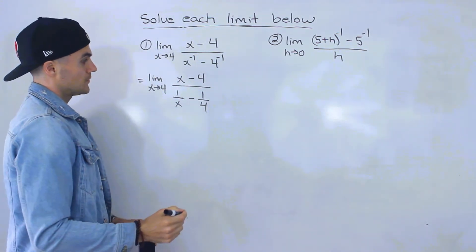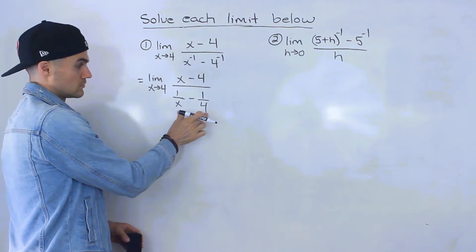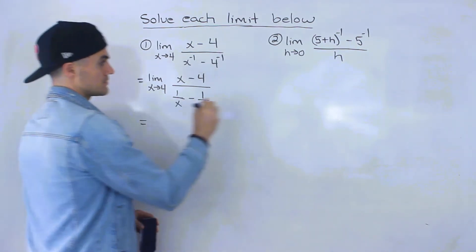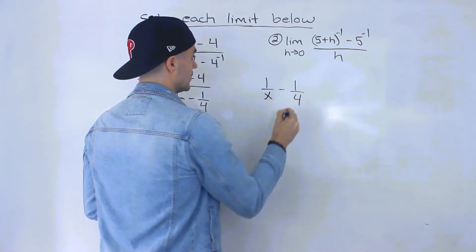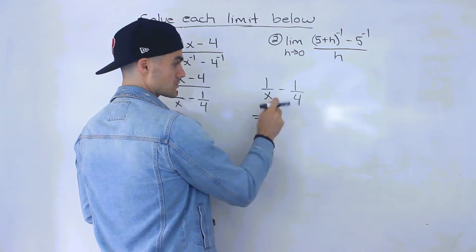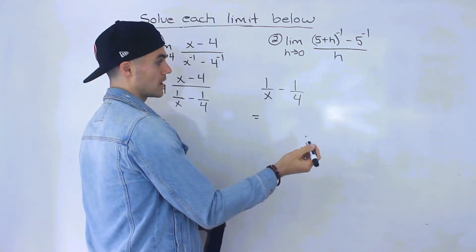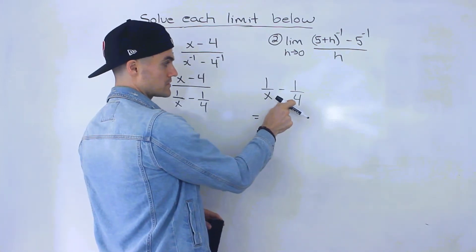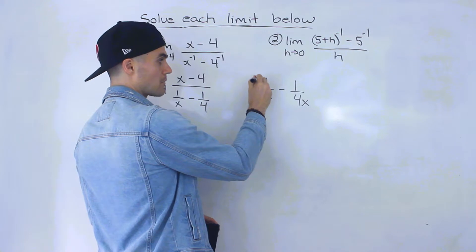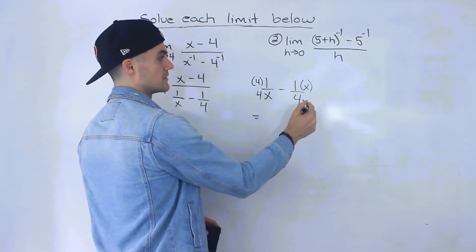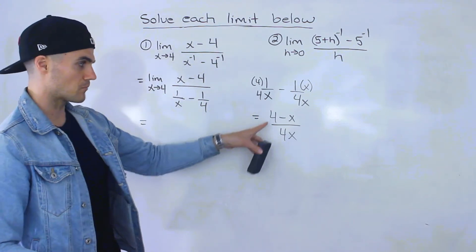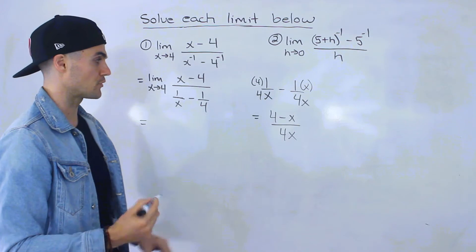From here, you have to combine these two into one fraction. We have 1 over x minus 1 over 4. Since we're subtracting fractions, we need a common denominator. We can multiply the first fraction by 4 over 4 and the second by x over x. So 1 times 4 gives us 4 on top, and 1 times x gives us x on top — but we're subtracting, so that becomes 4 minus x, all over 4x. So 4 minus x over 4x is the same as 1 over x minus 1 over 4.